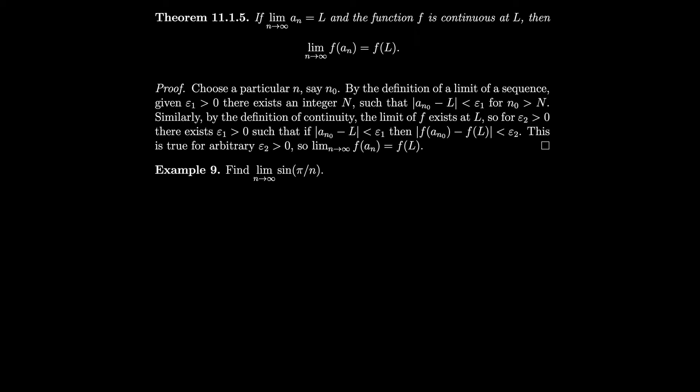Let's find lim sin(πn) as n → ∞. We pass the limit inside the sine function using our theorem: sin(lim πn/n... wait — sin(lim π/n). The limit of π/n is 0 since the denominator grows without bound regardless of the numerator. So this equals sin(0) = 0.